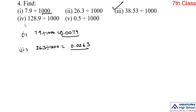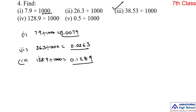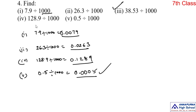You can do the third one as homework. The fourth one is 128.9 divided by 1000. Ignore the decimal point and write the number. Shift the decimal point towards left by three digits: 1, 2, 3, put point. The answer is 0.1289. Now, can you do the fifth one as homework? Let me explain this one also: 0.5 divided by 1000. Write 0, 5. Shift this decimal point towards left by three digits: 1, 2, 3 — put point. The answer is 0.0005. Like that, we can do the problem.